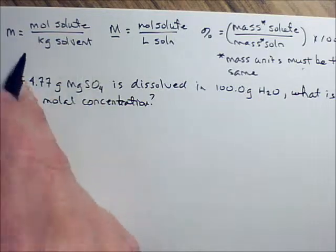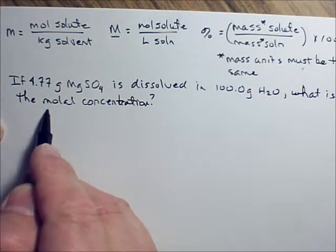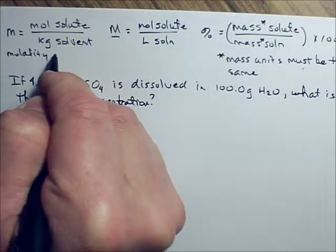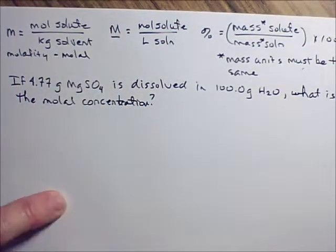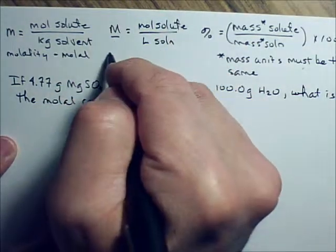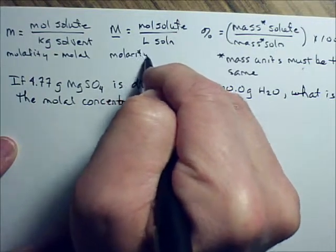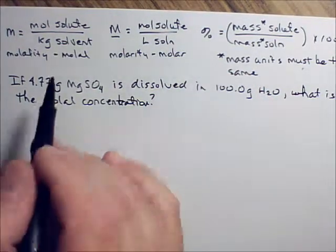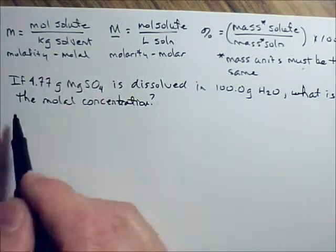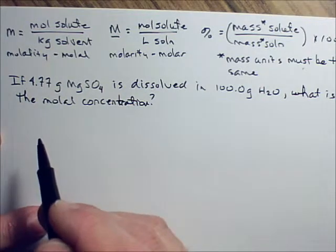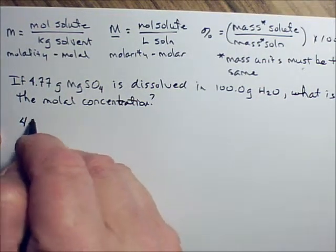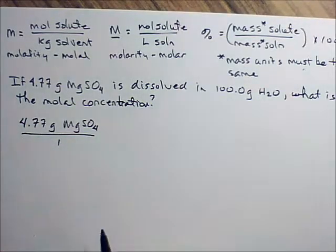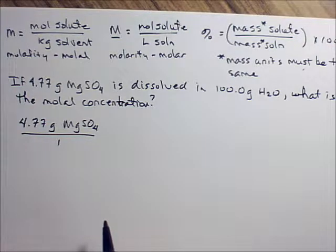What do we need if we're looking for mole concentration? That's molality — moles of solute over kilograms of solvent. We need to get moles of our solute. So we're going to put 4.77 grams of magnesium sulfate over one and convert it to moles. Anytime you're converting something to moles, you have to have the molar mass. The way you've been taught to calculate molar mass is to list each of the elements.